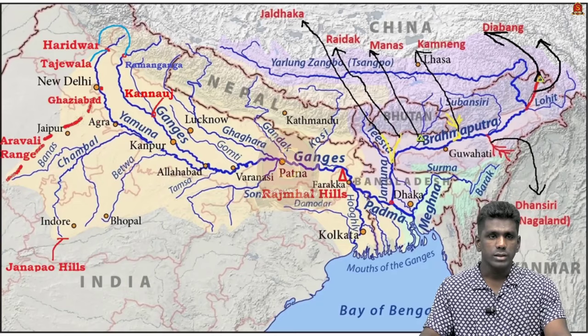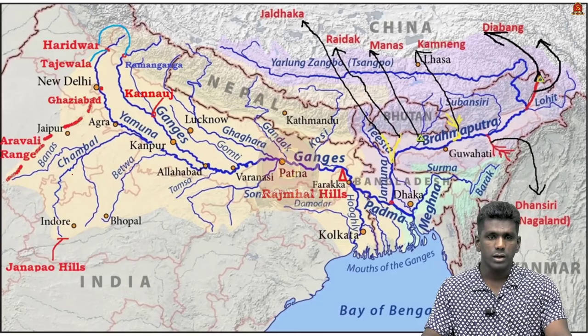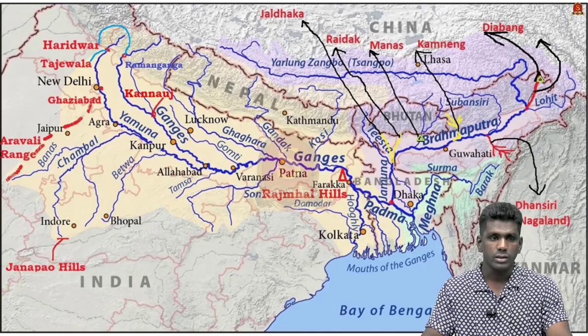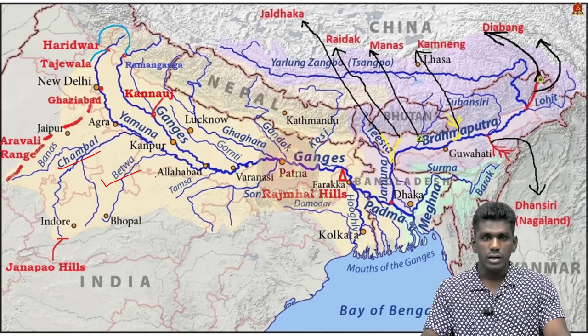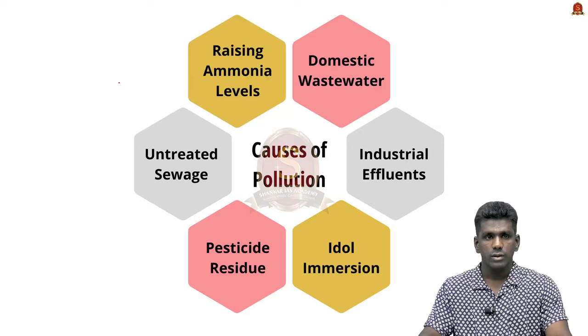Now, look at this map. These are the important tributaries of River Yamuna: Chambal, Betwa, Ken, Tons, Hinden, etc.